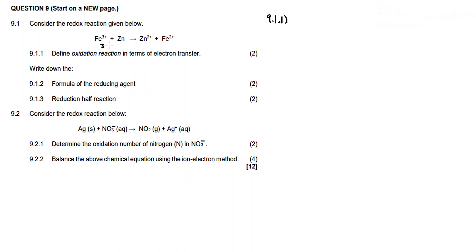The oxidation number of iron(III) on the left is +3; on the right-hand side it's +2. So it went from +3 to +2 — a decrease. The oxidation number of zinc on the left is zero, then it becomes +2. From +3 to +2, the oxidation number decreases, so iron undergoes reduction. When the oxidation number increases, the substance undergoes oxidation.